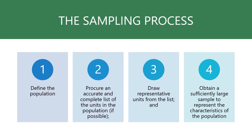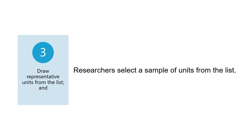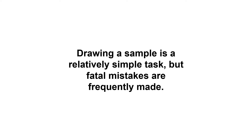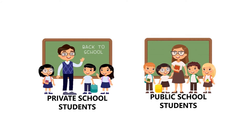The third step is to select a representative sample. After defining a population and listing all the units, researchers select a sample from the list. Drawing a sample is a relatively simple task, but fatal mistakes are frequently made. If units are selected that are conveniently at hand — a group of volunteers, the first 25 names on a list, the people who live one block, or the parents who attended a meeting — these units may differ from the remaining units and may not be representative of the population. A good sample must be as nearly representative of the entire population as possible.